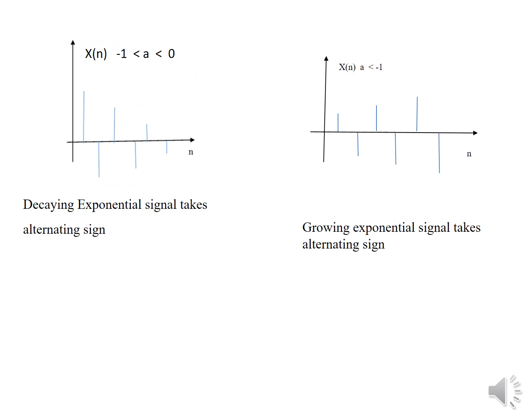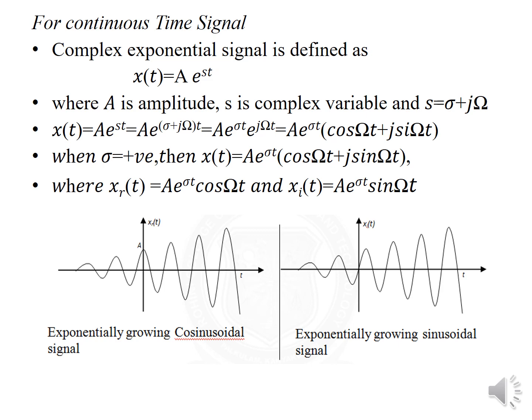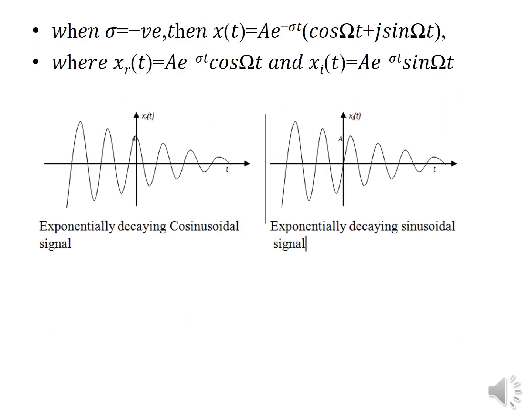When a is between minus 1 and 0, we get a decaying exponential signal that takes alternate signs, and when a is less than minus 1, we get a growing exponential signal that takes alternate signs. For continuous time, the complex exponential signal is defined as x(t) = A·e^(st), where s = σ + jω. Substituting, we get x(t) = A·e^(σt)[cos(ωt) + j·sin(ωt)]. When σ is positive, we get an exponentially growing cosinusoidal and sinusoidal signal. When σ is negative, we get an exponentially decaying cosinusoidal and sinusoidal signal.